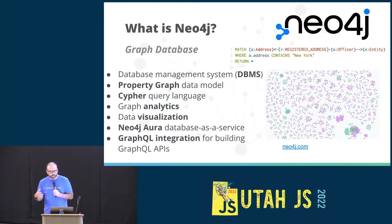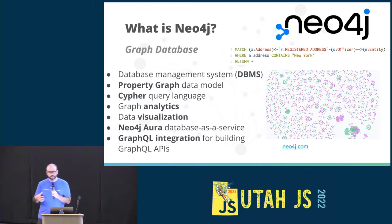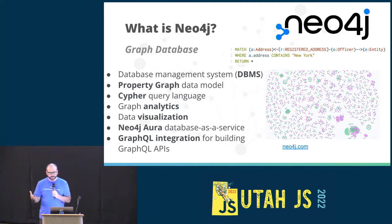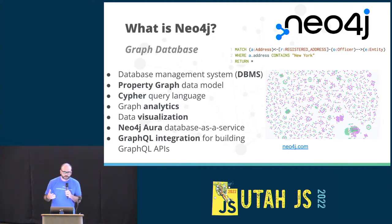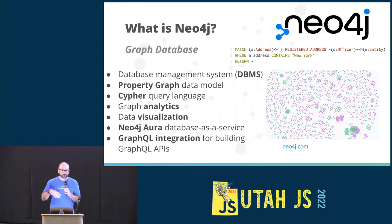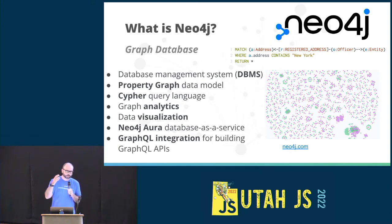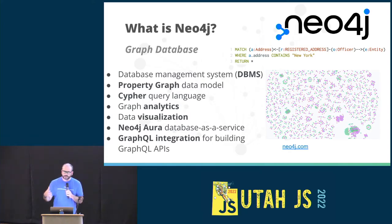We specifically use a data model called the property graph data model. We use a query language called Cypher. There are lots of interesting things you can do with graphs and graph databases, from things like data science and analytics, but what we're going to talk about today is more of the transactional use case — building an API for a web application.